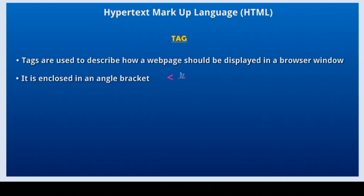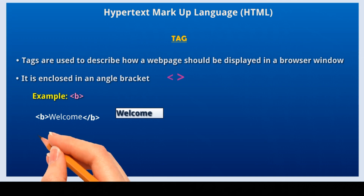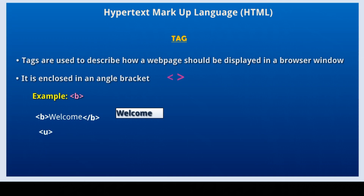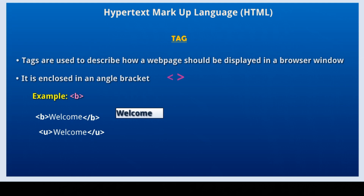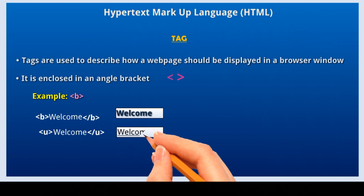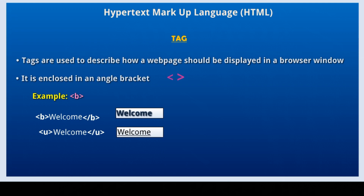Less than and greater than symbols are used to write the angle bracket. For example, tag B — this is the opening tag B, then write some content, for example 'welcome', then write the closing tag B. Closing tag has a slash symbol. Here the tag B instructs the browser window to write the word 'welcome' in bold letter. Now let us see another example, tag U. The opening tag U, then write the word 'welcome', then write the closing tag U. Here the tag U instructs the browser window to underline the word 'welcome'. That is, tags are used to describe how a web page should be displayed in a browser window.